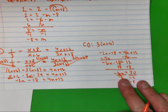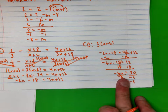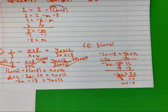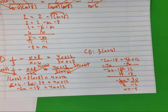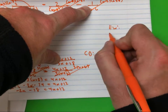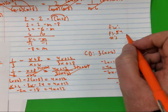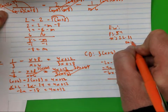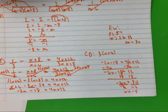Your homework tonight is page 54 in your notebook, numbers 26 through 31, omit 30. That is your homework. I'm going to continue with this tomorrow. Remember, there are quizzes tomorrow. Thank you.